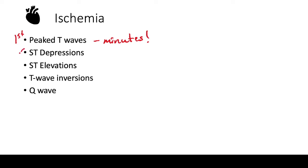Next you have ST depressions and ST elevations, which we'll show examples of. After that you start getting T wave inversions, and if a patient had an infarct for already a few days or a long time ago, you'll have scar tissue presenting as Q waves.